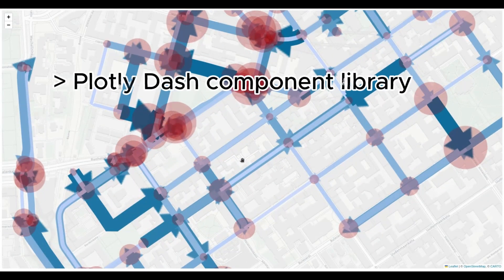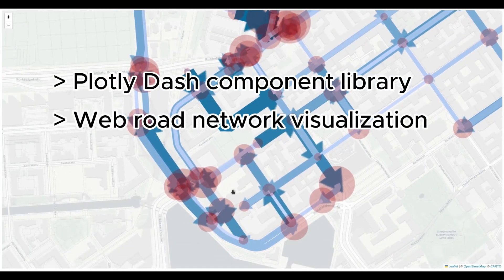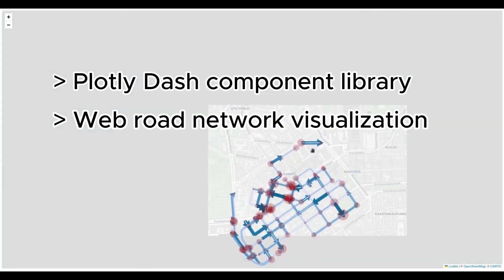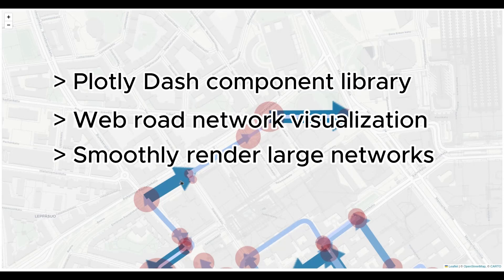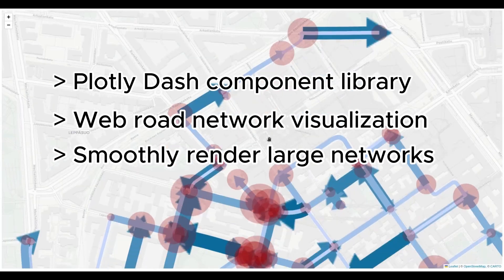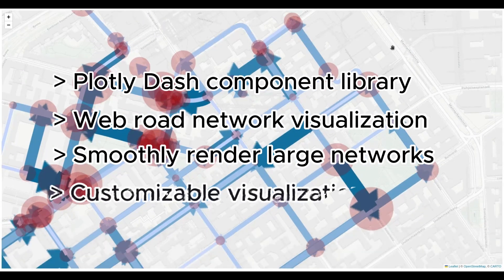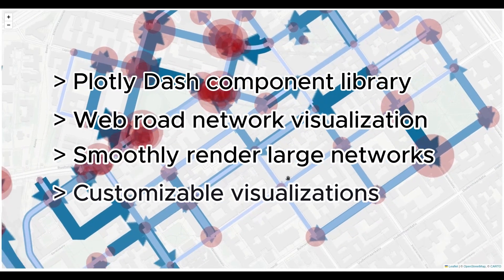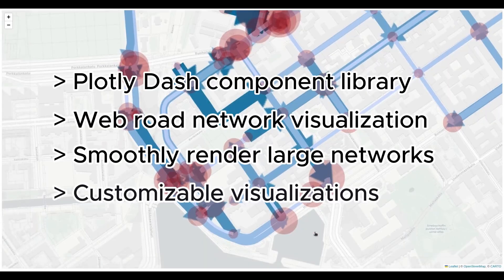DashSilverEye is a PlotlyDash component library that produces interactive web-based visualizations of large primal road networks in Python. It allows users to smoothly render interactive road networks with thousands of nodes, edges, and markers on mid-range laptops and workstations. The visualizations are customizable with the ability to manipulate colors, sizes, alpha, and visibility of individual nodes, edges, and markers.